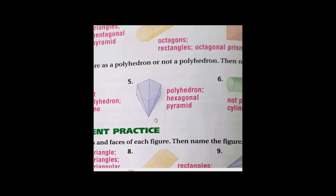Question number five — all the sides are polygons, so it's a polyhedron. Let's see the name: count the base — we have one base, so it's a pyramid. Count the sides of the base: one, two, three, four, five, six — six sides means it's a hexagon. So the name will be hexagonal pyramid, because it has only one base and all the faces are triangles.